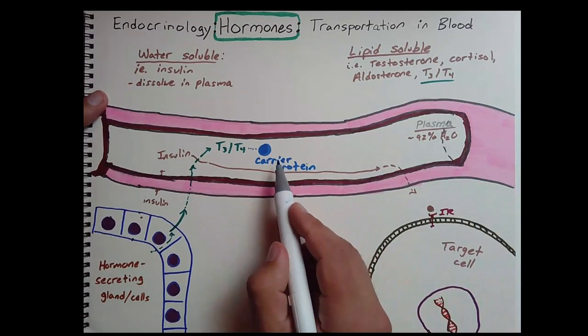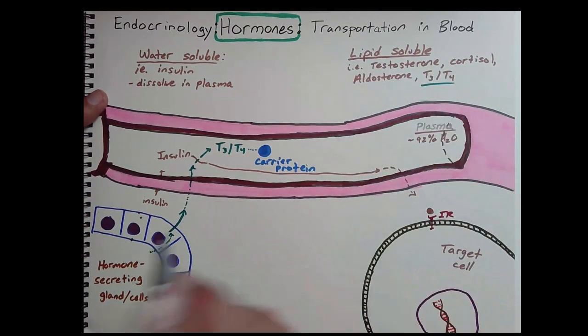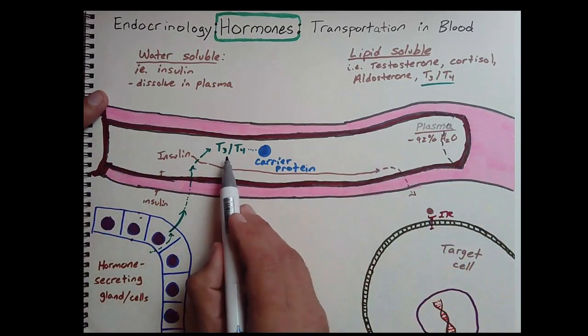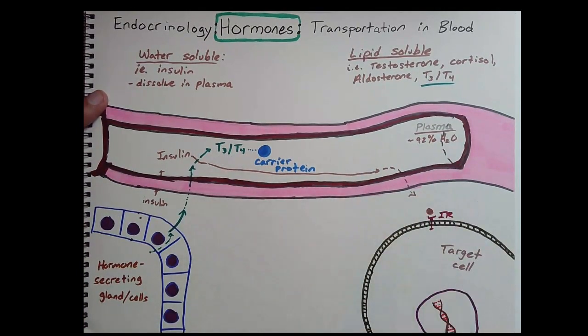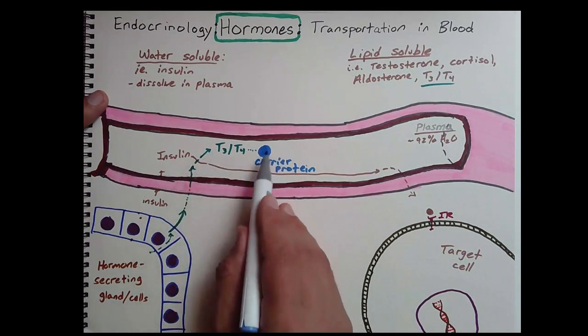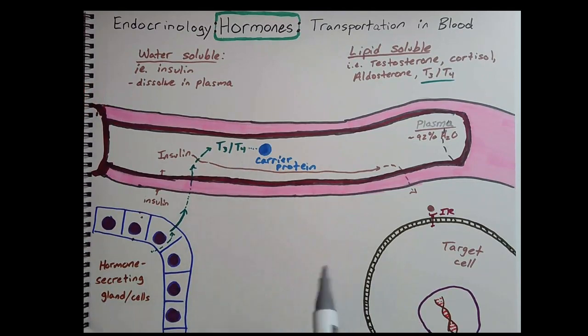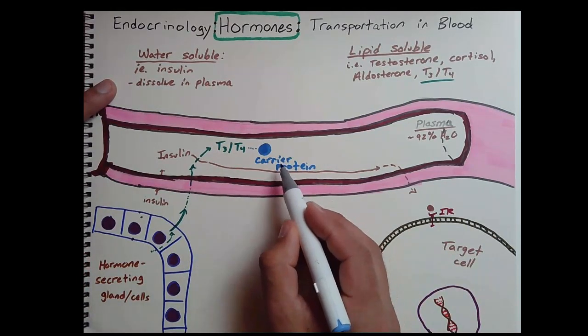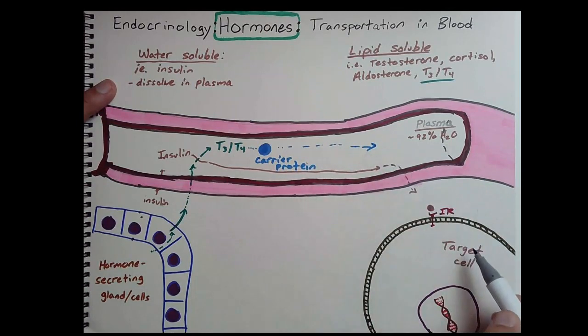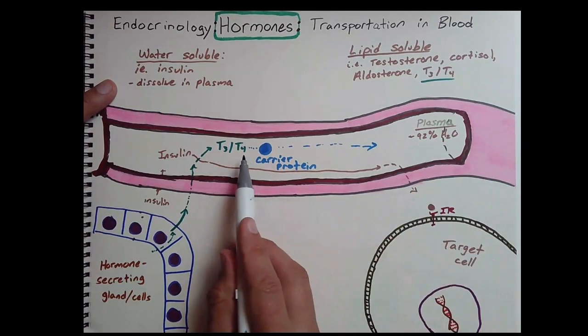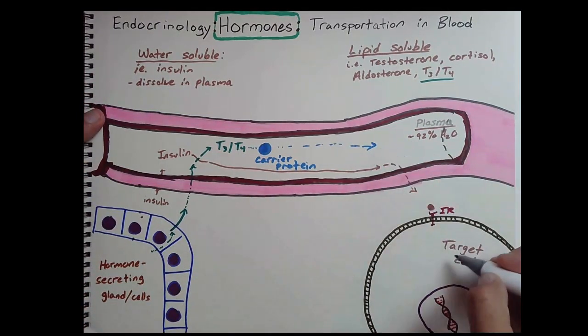This right here is what's known as a plasma carrier protein. And I like to think of it as an analogy, as an Uber. It's an Uber or Lyft for a lipid-soluble object. It's a taxi. So T3, T4 can't get to where it needs to go without getting an Uber. So it's going to call an Uber. These carrier proteins are going to come, pick up the T3, T4, embrace it in this gentle interior of the protein, protecting it against all the water. And then from there, this combined unit is going to be transported down near the target cell, and the target cell is going to be sending signals out to the carrier protein.